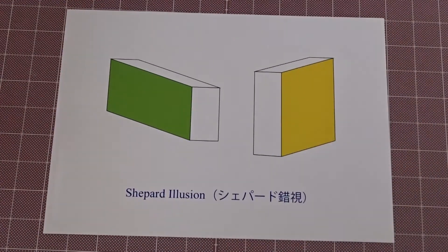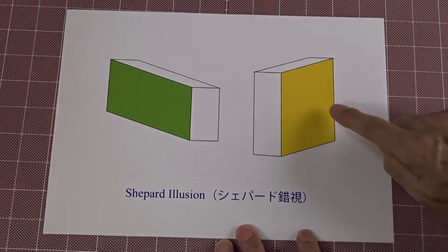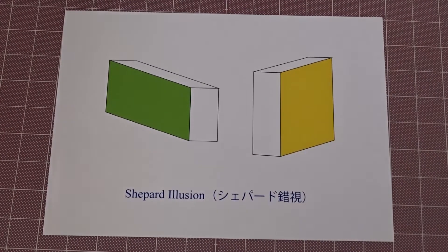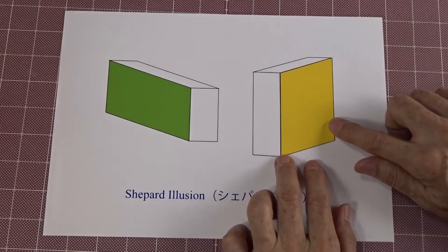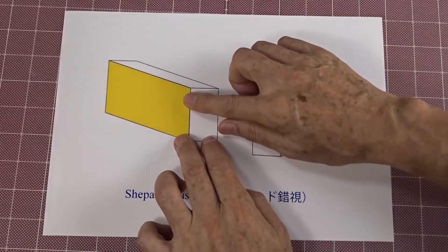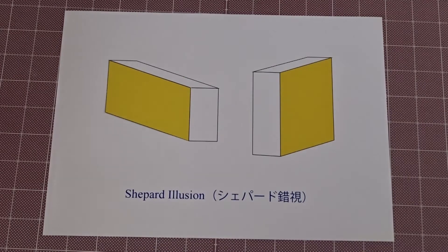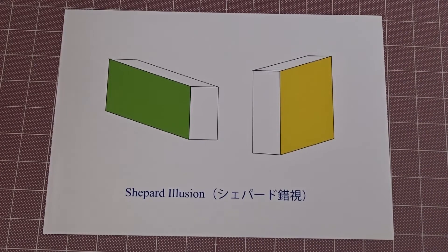Let me show another example of the Shepard illusion. Here we have two objects standing on their sides. The yellow parallelogram and the green parallelogram look very different from each other, but in 2D space they are the same shape. Here we have the yellow parallelogram, and if we move it to the green one, it matches perfectly. But it is very difficult to understand that these two parallelograms are the same shape in 2D space.